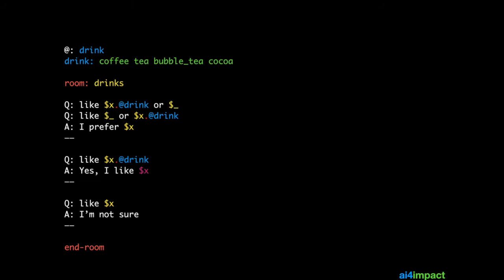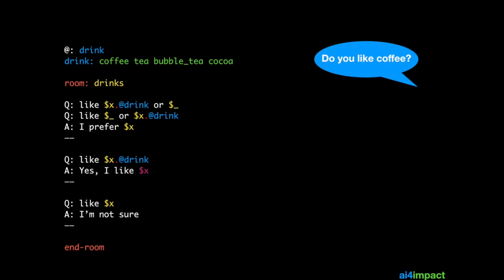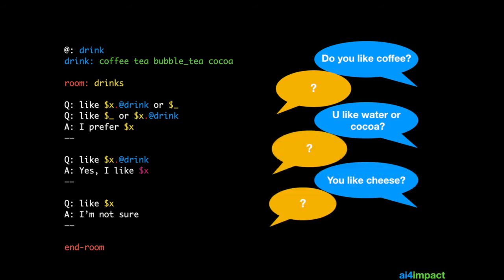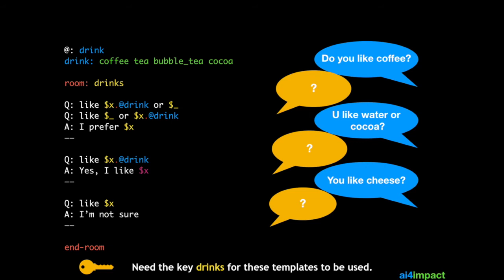Let's see how this works. Taking a look at the key to the room — for questions like 'water' or 'cocoa' these rules would have matched, but the user does not have a key into this room. Once you create a room, the user needs a key to that room for those templates within the room to be used.